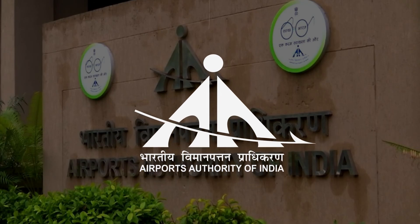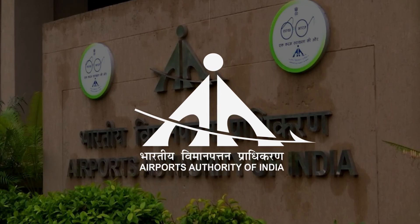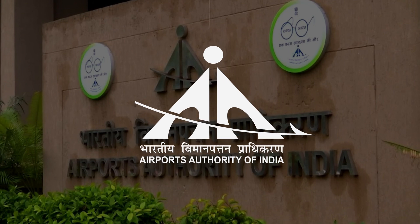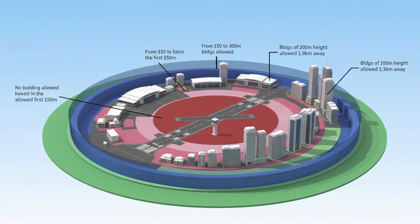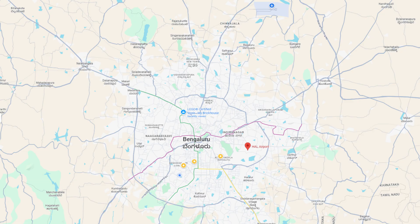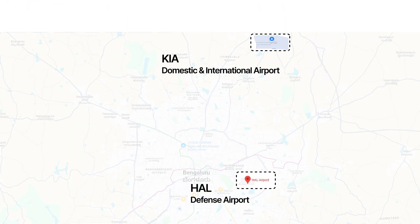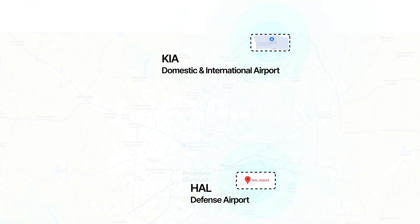Now, apart from FSI, you also need permissions from the airport authorities in a city to be able to construct tall buildings. The closer the proximity to an airport, the tighter the restrictions. For example, if you look at Bangalore, there are two airports — the Domestic and International Passenger Airport and the Defence HAL Airport within the city.